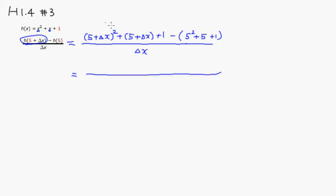So here, if you multiply out, you're going to get the 5 squared, so it's 25. And 2 times 5 times delta x is going to be plus 10 delta x. And then you're going to have delta x squared, so delta x squared. Then you're going to have plus 5 from here, and plus delta x, and plus 1.